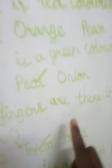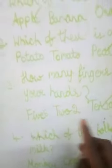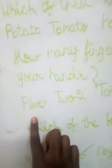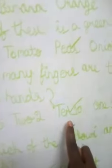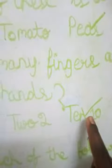How many fingers are there on your hands? 5, 2, 10, or 1? 10 is the correct answer.